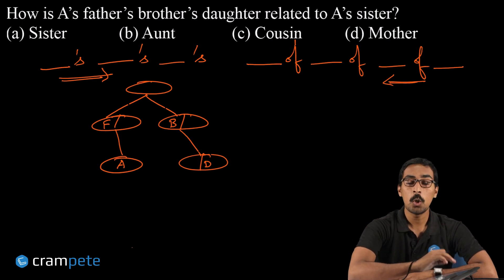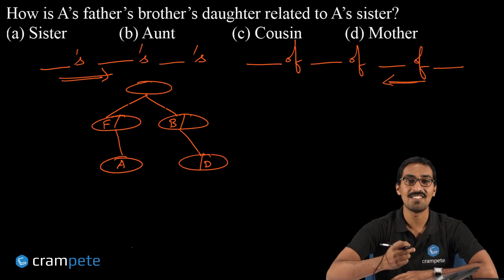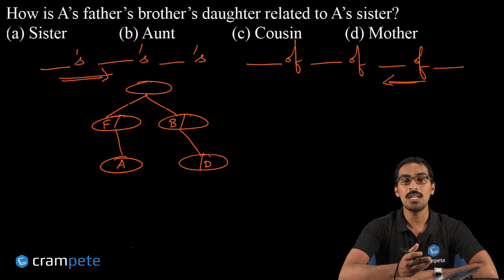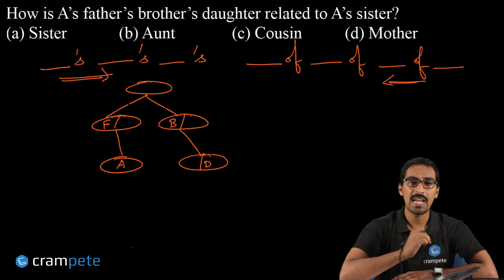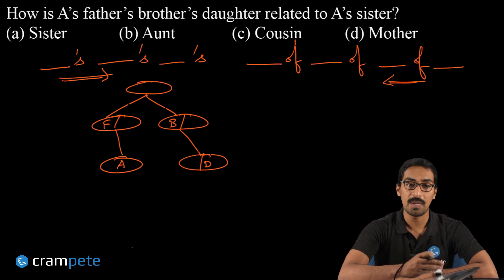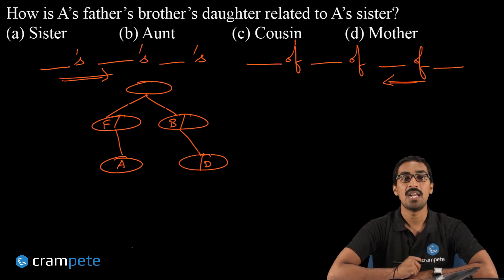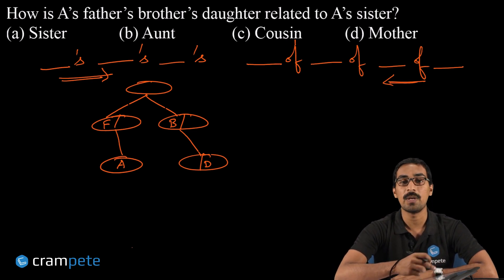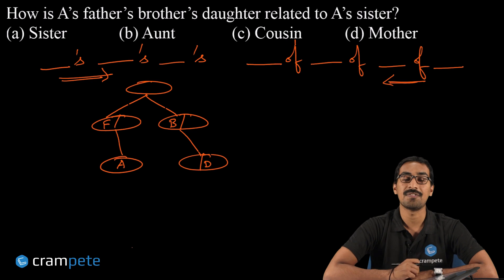So is the position of each person correct as per the gender? Let's check. A—we don't know the gender of A. Doesn't mean A doesn't have a gender; we don't know the gender of A, could be male or female. So A is present in the center without a proper partition. A's father is male, so we have him on the left side. A's father's brother is male, so we have him as well on the left side. The brother's daughter is female, so we have her on the right side of the circle.